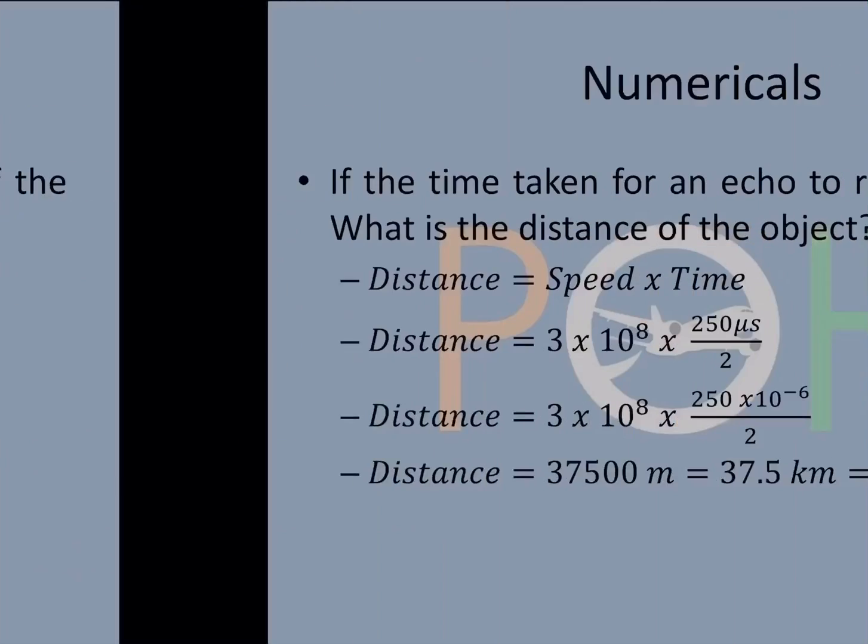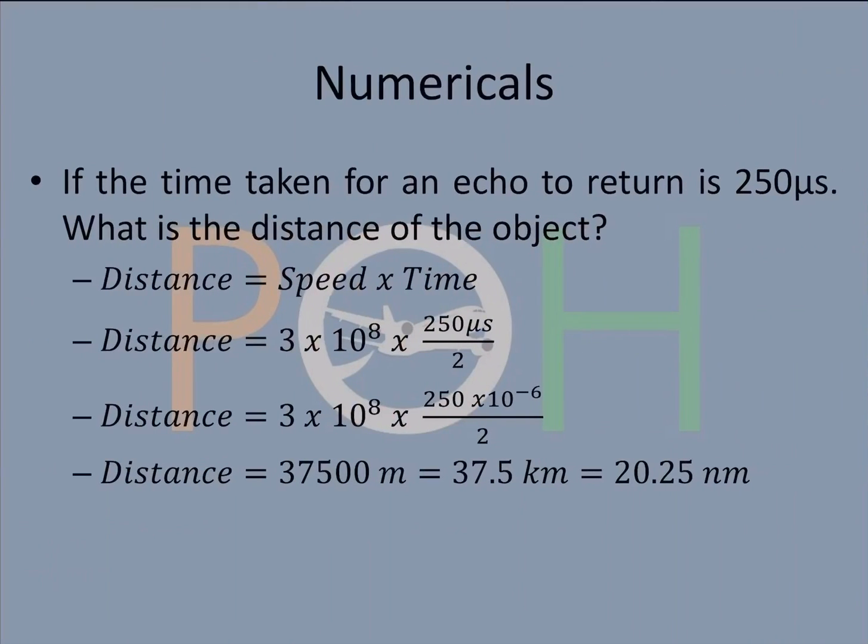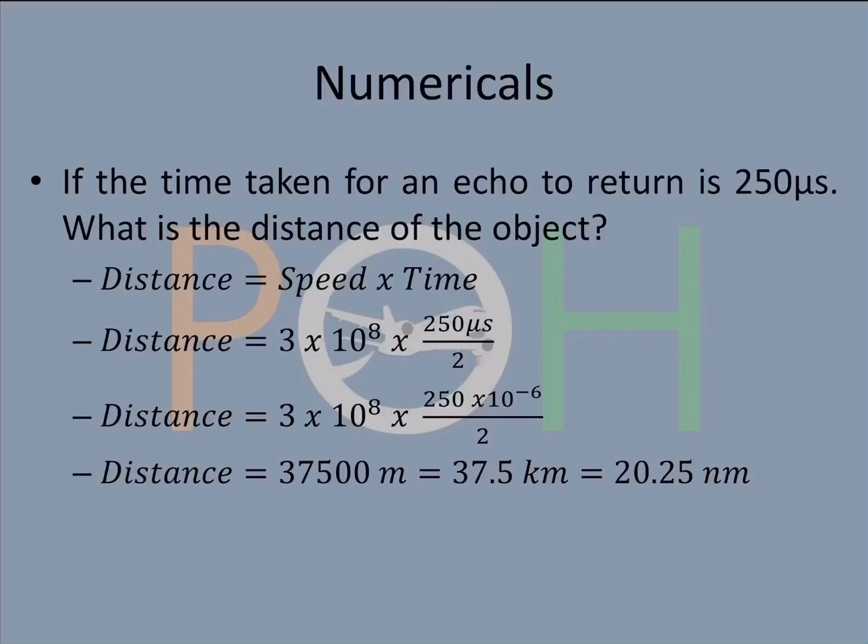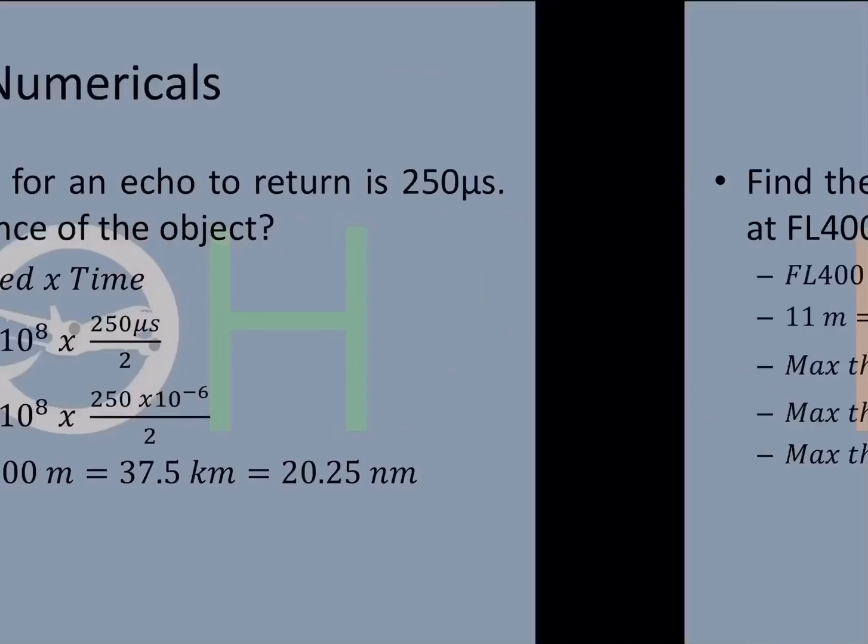Another one is, if the time taken for an echo to return is 250 microseconds, what is the distance of the object? Distance is speed times time. Any electromagnetic wave will be traveling at 3 times 10 to the power 8, that is something that you have to really know all the time. The time is 250, but the thing is that time taken is two-way, it's an echo, so I have to find distance only between two points. That's why I'm doing 250 microseconds divided by two. When you solve this, you will get 37,500 meters, which is of course converted as shown, 20.25 nautical miles.